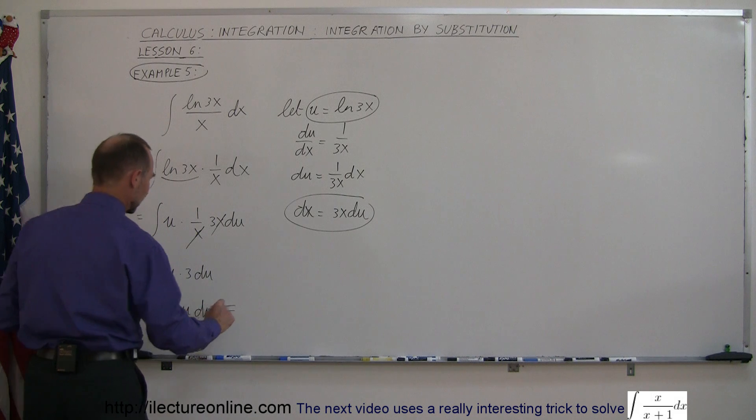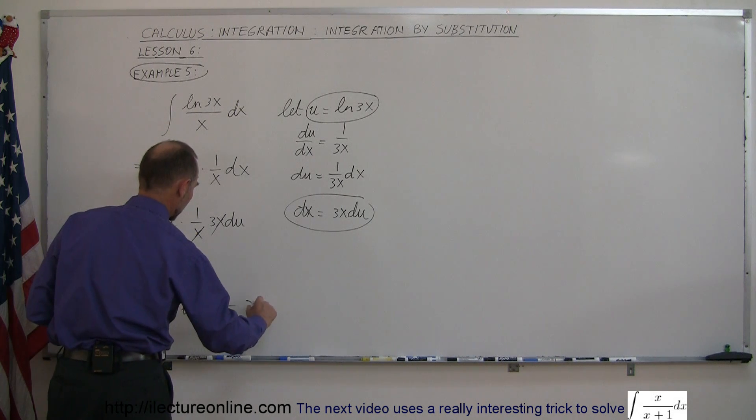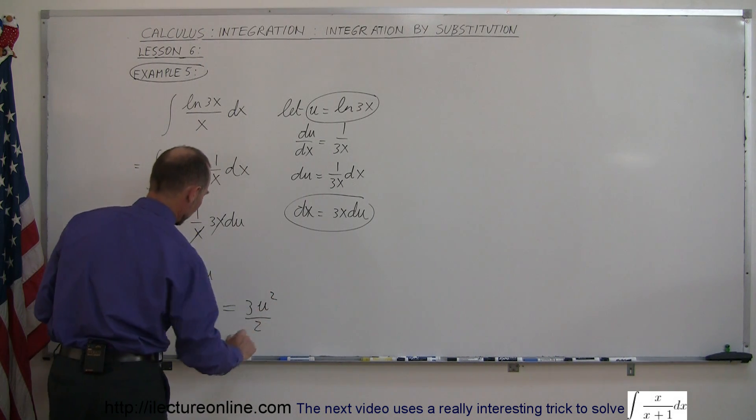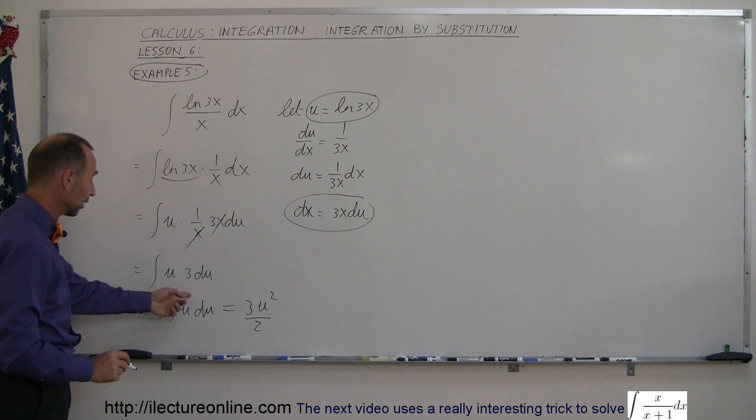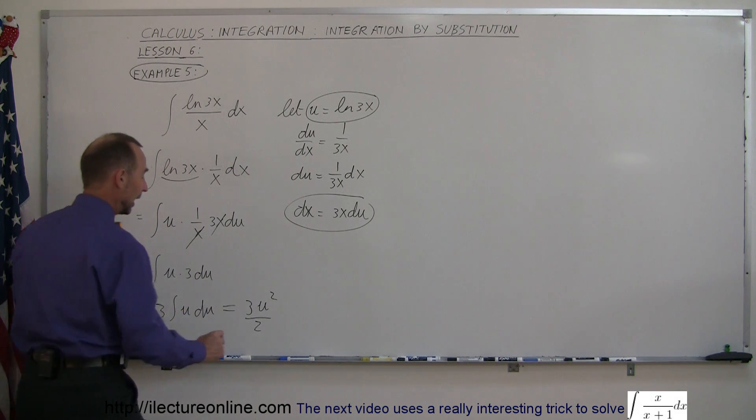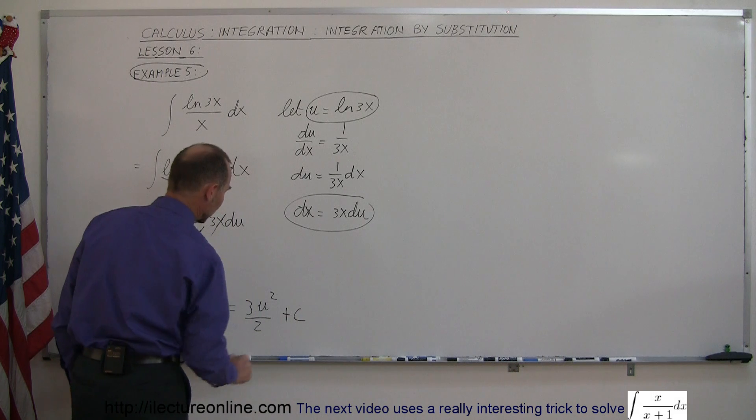And that can be integrated. This is equal to 3 times u squared over 2. Raise 1 to the exponent, divide by the new exponent. And then plus a constant of integration.